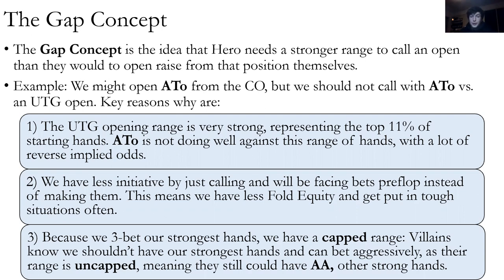Ace-ten offsuit is an open raise from the cutoff, but we should not call versus an under-the-gun open. There are three key reasons. The biggest is that the under-the-gun range is very strong and we have lots of reverse implied odds with a hand like ace-ten offsuit — they'll often have ace-king, ace-queen, ace-jack, pocket aces, pocket tens. By just calling, we lose the initiative: we'll be facing bets rather than making them, we have less fold equity, and we get put in tough situations often.